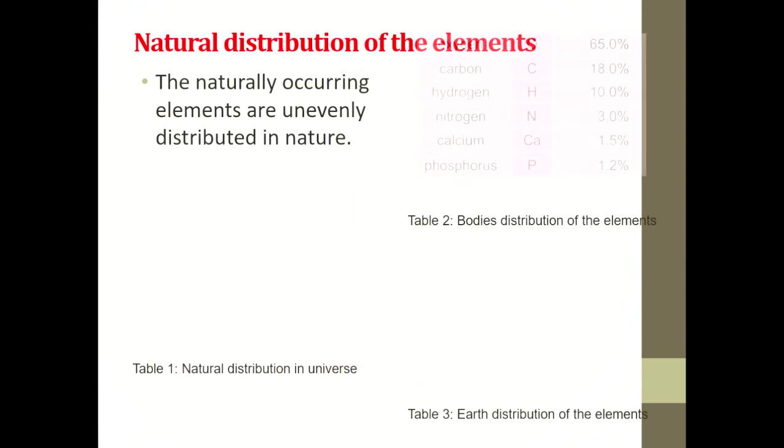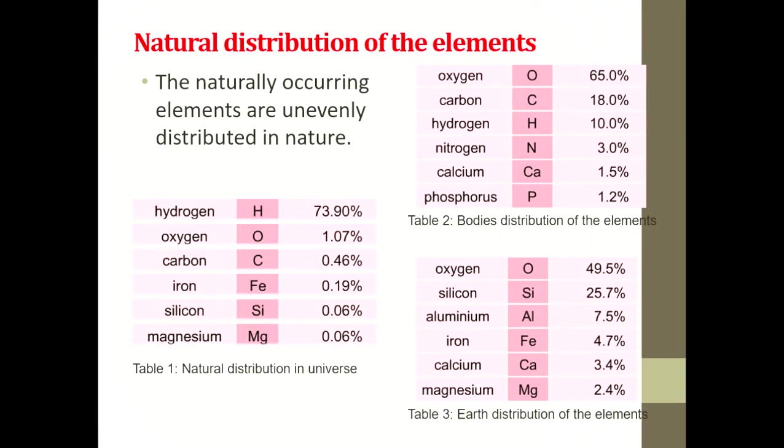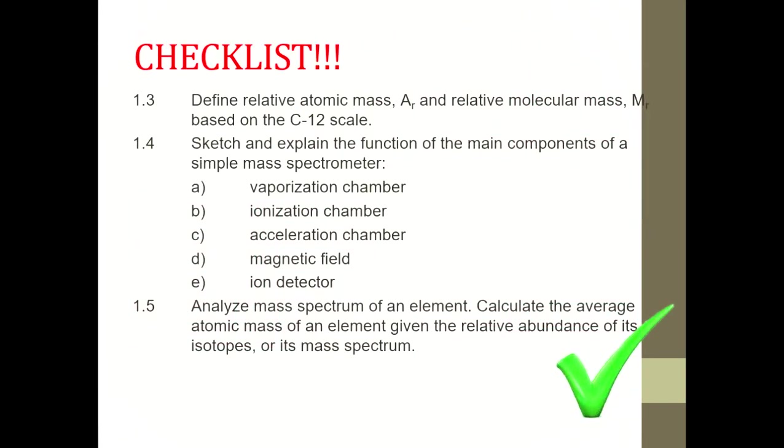Okay, shown here is the naturally occurring elements that are unevenly distributed in nature. This is table 2 shows the elements in our body. And then, earth distribution, this is from the soil. Okay, so that's about it for our lesson 2.